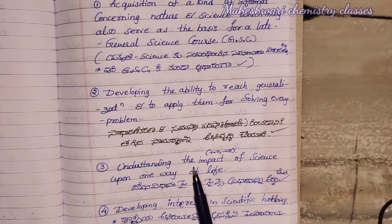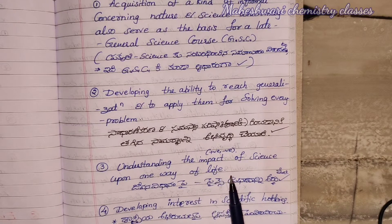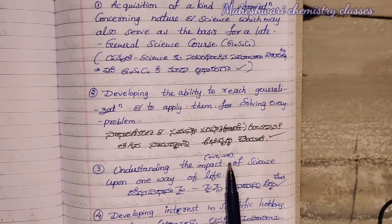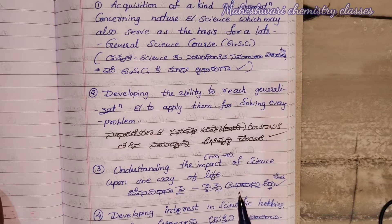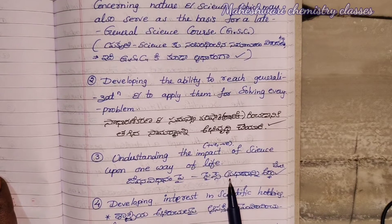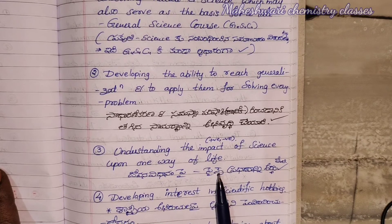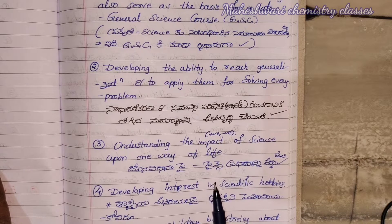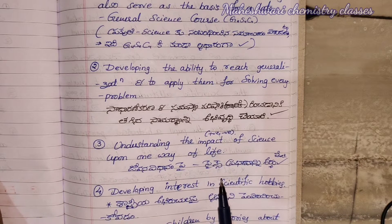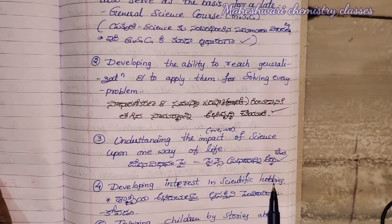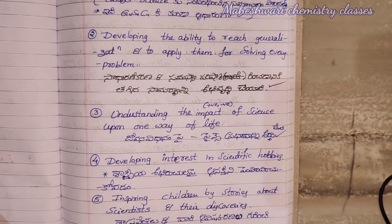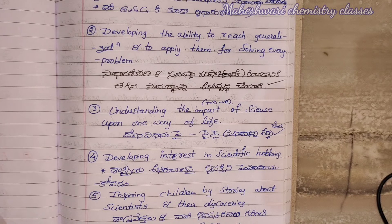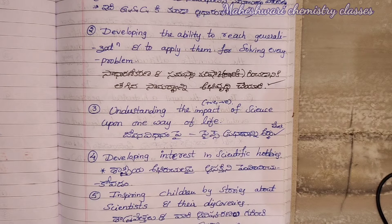Third one: understanding the impact of science upon one's way of life — understanding whether that impact is positive or negative. Fourth one: developing interest in scientific hobbies. Fifth: inspiring children by stories about scientists and their discoveries.